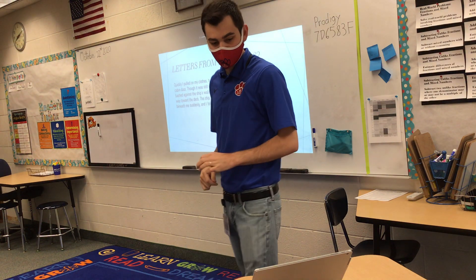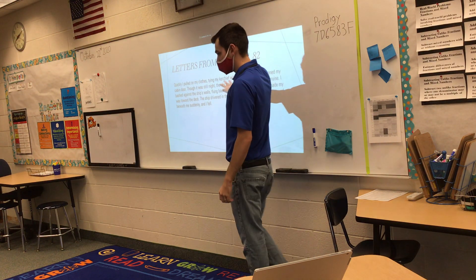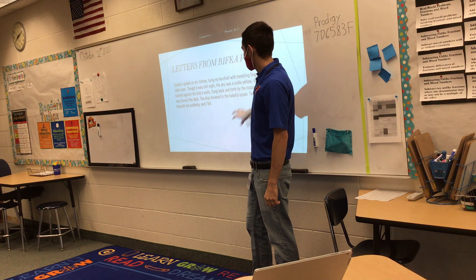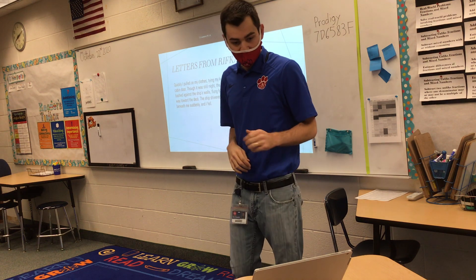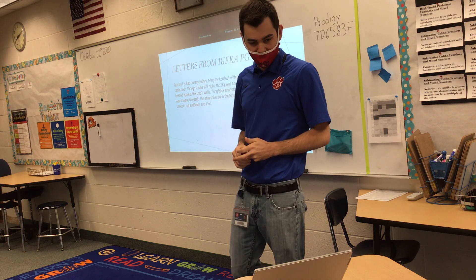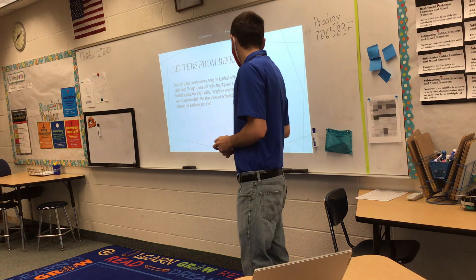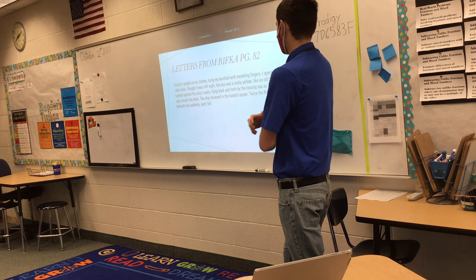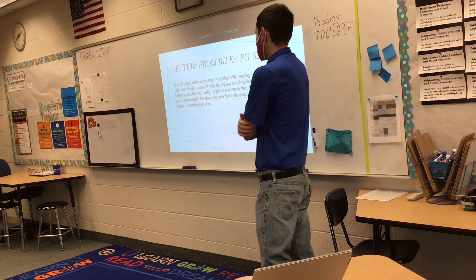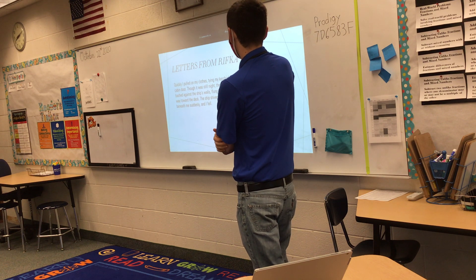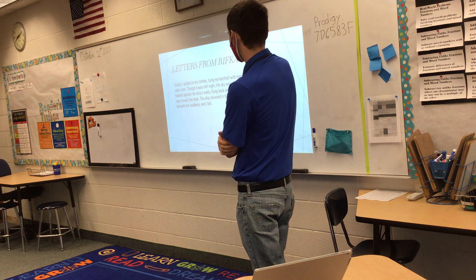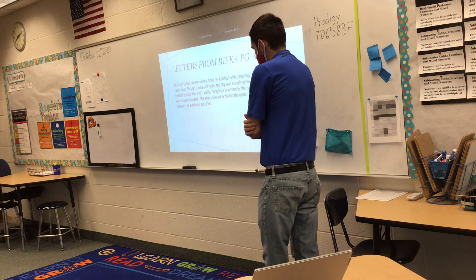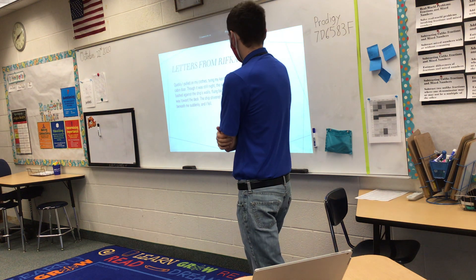Let's go to Letters from Ripka — remember that book we pulled from earlier? This is page 82. 'Quickly I pulled on my clothes, tying my kerchief with trembling fingers. I opened my cabin door. Though it was still night, the sky was a sickly yellow, like an old bruise. I bashed against the ship's walls, flung back and forth by the tossing sea as I made my way toward the deck. The ship shivered in the hateful ocean. Twice the floor dropped beneath me suddenly, and I fell.'